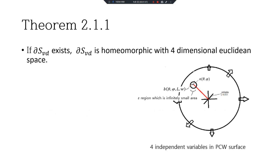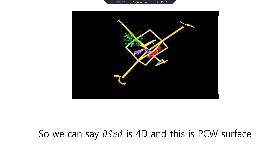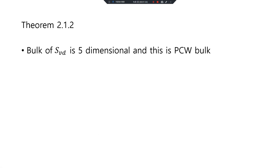If DS3D exists, DS3D is homeomorphic with 4-dimensional Euclidean space. 4D Euclidean space is a metric space with 4 independent variables, which is the usual 4-dimensional space. So we can say DS3D is 4-dimensional and this is the PCW surface. The PCW bulk is 5-dimensional.